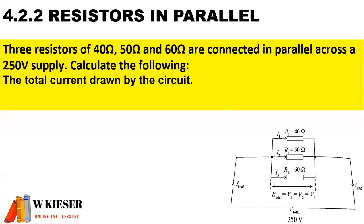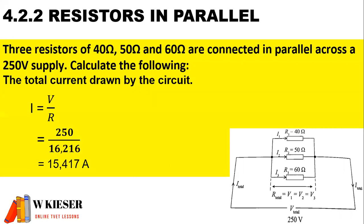To calculate the total current throughout the circuit using Ohm's Law, current is equal to voltage divided by the resistance total. Therefore, the total supply current throughout the circuit is 15.417 amps.